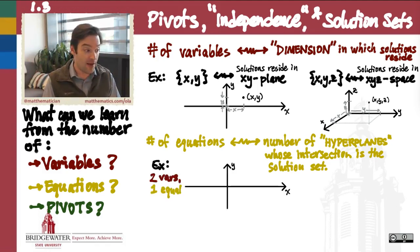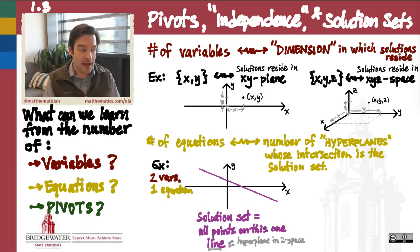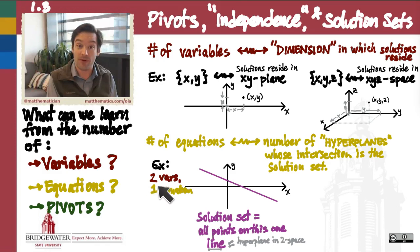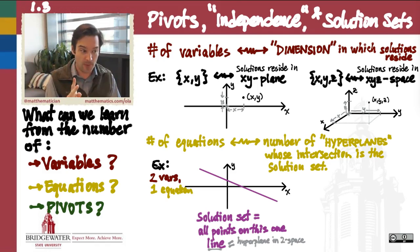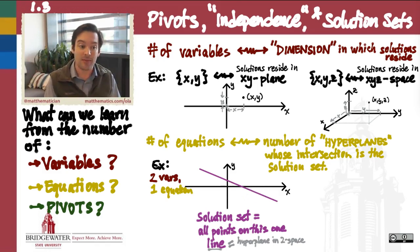Supposing that I have two variables for the moment, that means my solution set is going to live in a two-dimensional space like the xy-plane, and let's say that I only have one equation. So I write down one equation that gives me one constraint on the variables x and y — one thing that x and y have to satisfy. We have seen that a linear equation in two variables, when we graph it in the xy-plane, is going to look like a straight line.